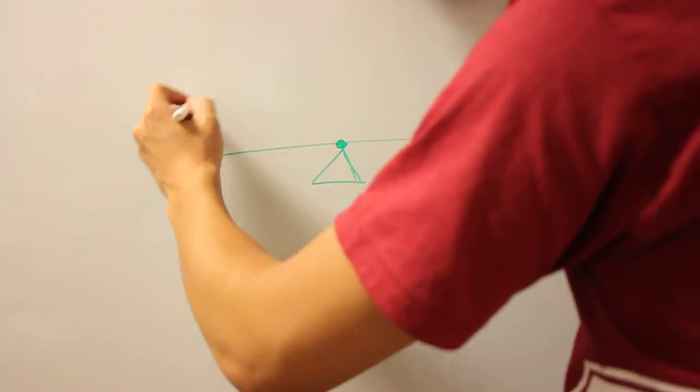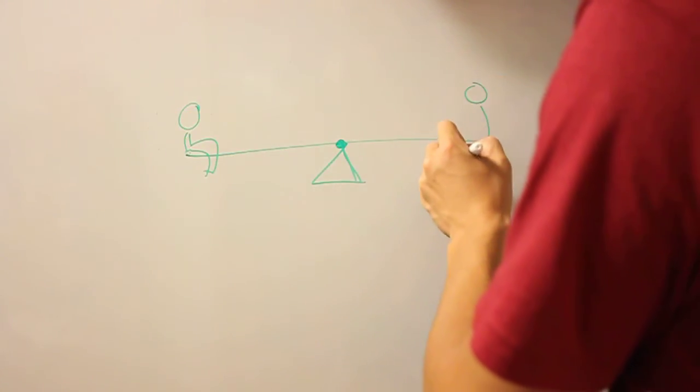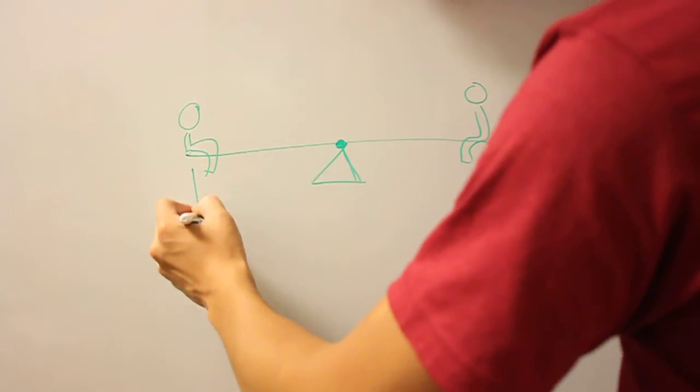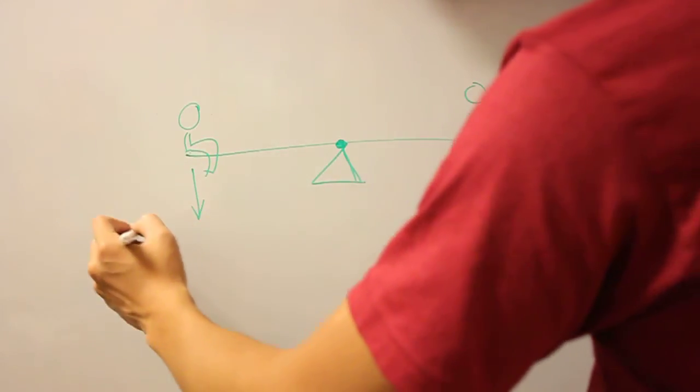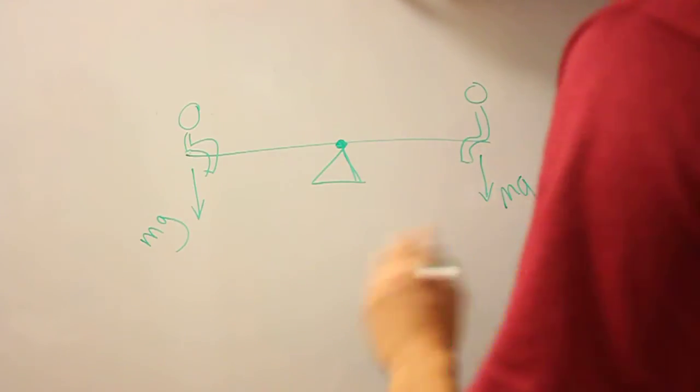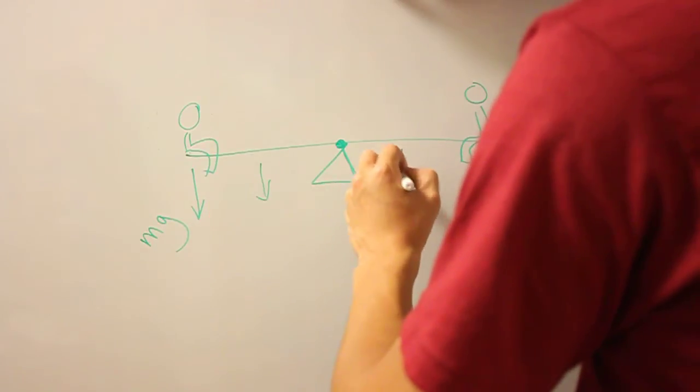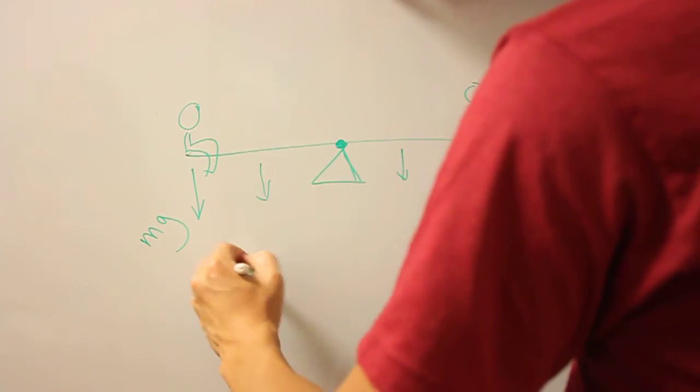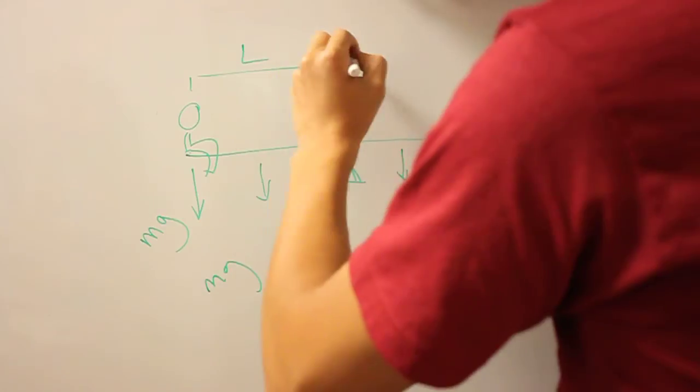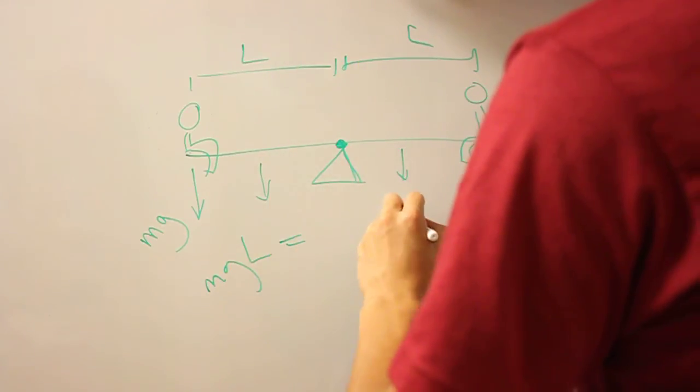And if you have two people who are exactly the same weight, then you think of weight as mg, which is the force of gravity. If they're the same, then the torque on this side matches the torque on this side, which is mgL equals mgL.